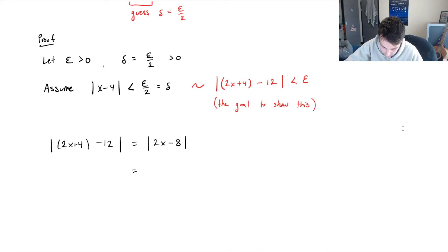Now look at the assumption that we made. So absolute value of x minus 4, that's got to be less than epsilon over 2. Or in other words, 2 times the absolute value of x minus 4 must be less than epsilon from our assumption.